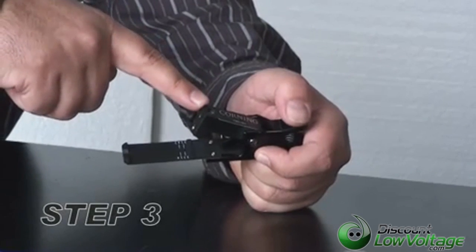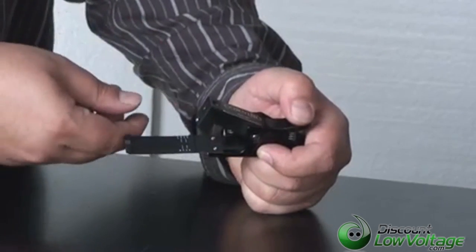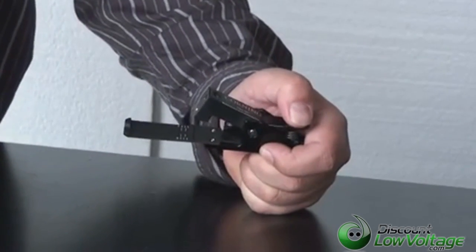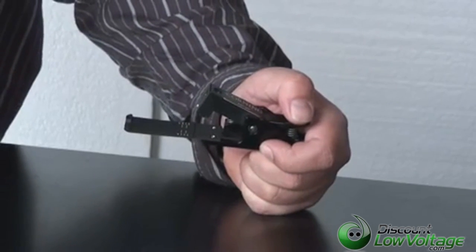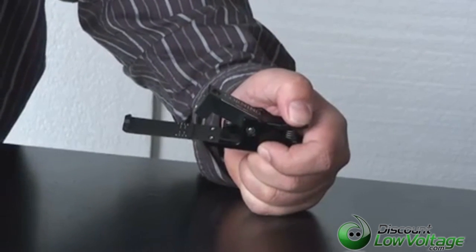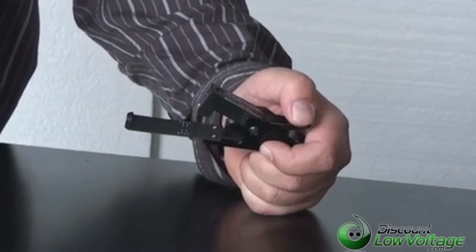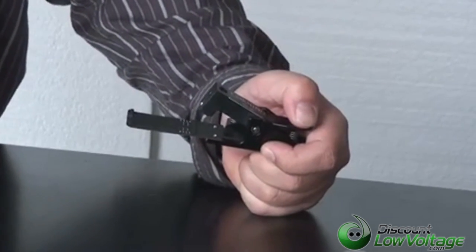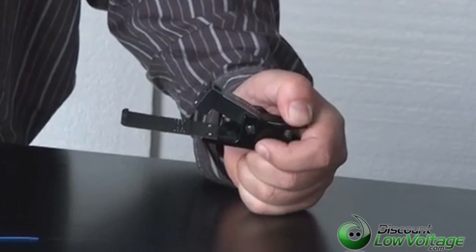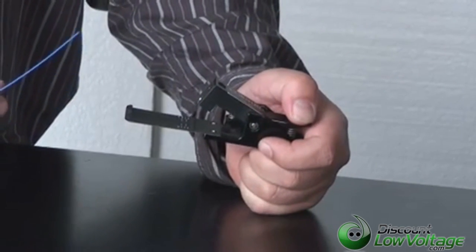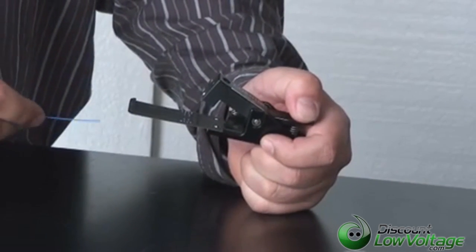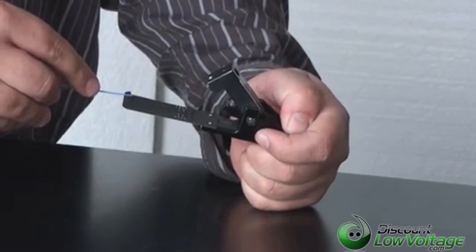Okay so we're going to use a Corning fiber cleaver. They call this their field cleaver. It's probably one of the most popular cleavers just because of the price. It's fairly inexpensive and it'll do multi-mode, not single mode. You don't really bump into single mode that often. Most of the time you're going to be working with multi-mode. Now we're going to slide our stripped fiber into the cleaver and cleave it.